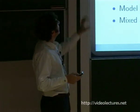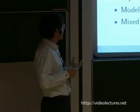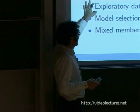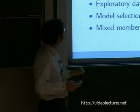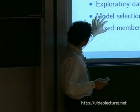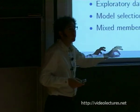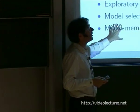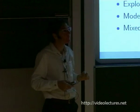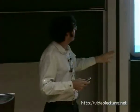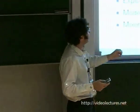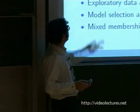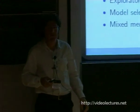Thinking of topic modeling as an application of these ideas, it touches on many different pieces of the applied statistical machine learning world: directed graphical models, conjugate and non-conjugate priors, time series modeling, modeling with graphs, hierarchical Bayesian methods, fast approximate posterior inference like MCMC or variational methods, exploratory data analysis, model selection, non-parametric Bayesian methods, and mixed membership models. In this talk we're going to touch on all of these topics. Topic modeling is a nice way to test out new methods of approximate posterior inference.